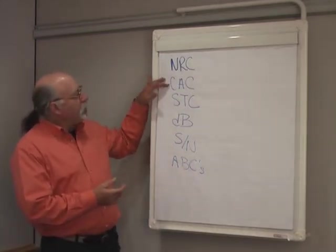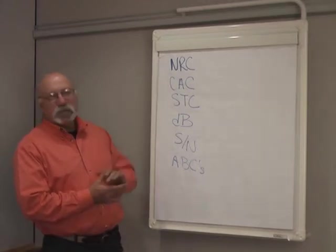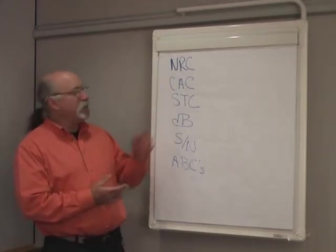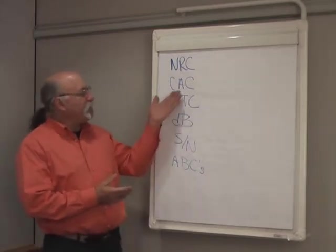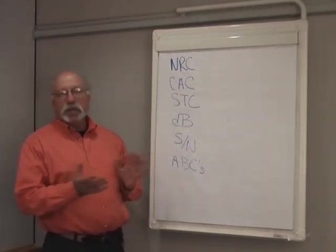The CAC is a measure of the transmission loss through a ceiling, so it's the ceiling attenuation class. That one is in decibels, and good numbers for that would be typically 35.